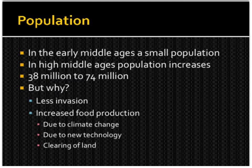We'll begin by talking about population. In the early Middle Ages there's a small population, but by the end — which we refer to as the High Middle Ages — there's a population increase. The population of Europe almost doubled, from 38 million to 74 million. One reason for this is less invasion — there are no more nomadic invasions.